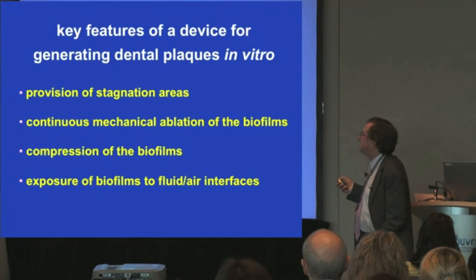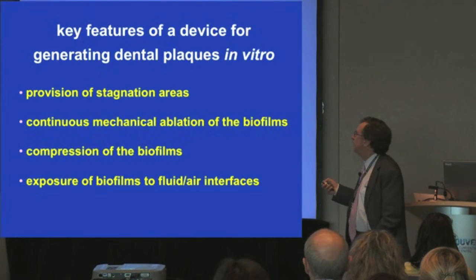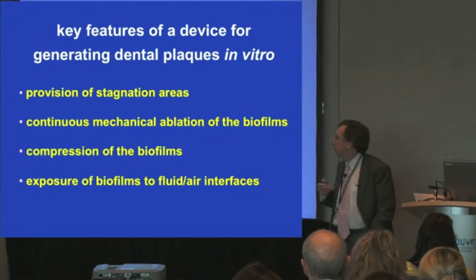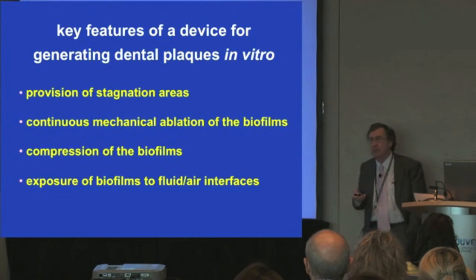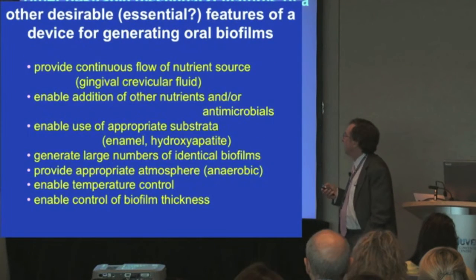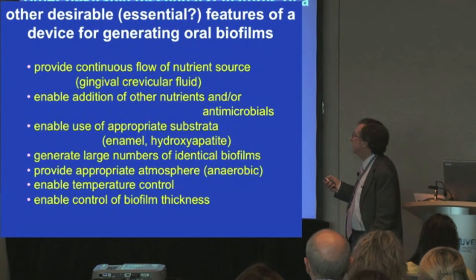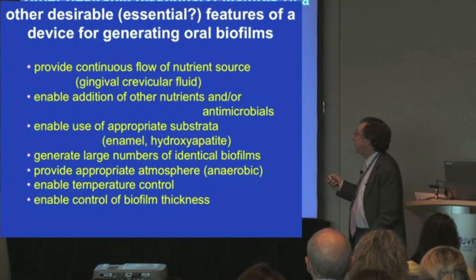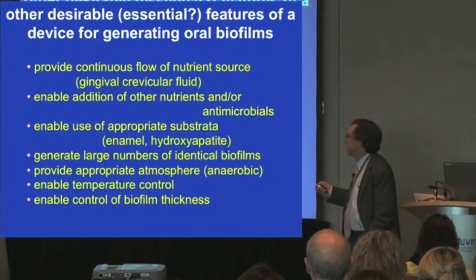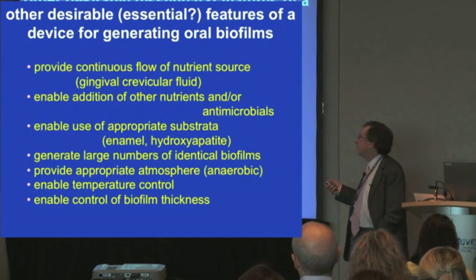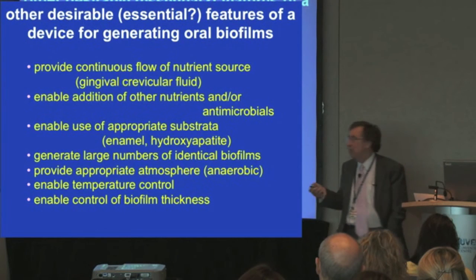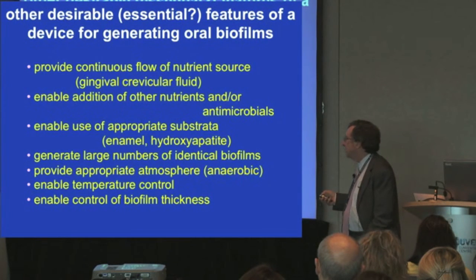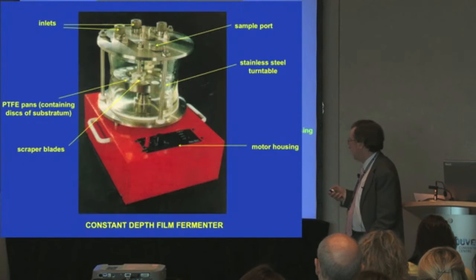The key features of any device for generating dental plaques in a laboratory must be the following: the provision of stagnation areas, continuous mechanical ablation of the biofilms as we get with chewing and tongue movements, compression of the biofilms, and exposure of biofilms to fluid-air interfaces as saliva moves over them. Other desirable attributes include facilities for continuous flow of the nutrient source, addition of other nutrients, use of appropriate substrata such as enamel or hydroxyapatite, generation of large numbers of identical biofilms, provision of an appropriate atmosphere — for example anaerobic for the subgingival region — temperature control, and control of biofilm thickness.